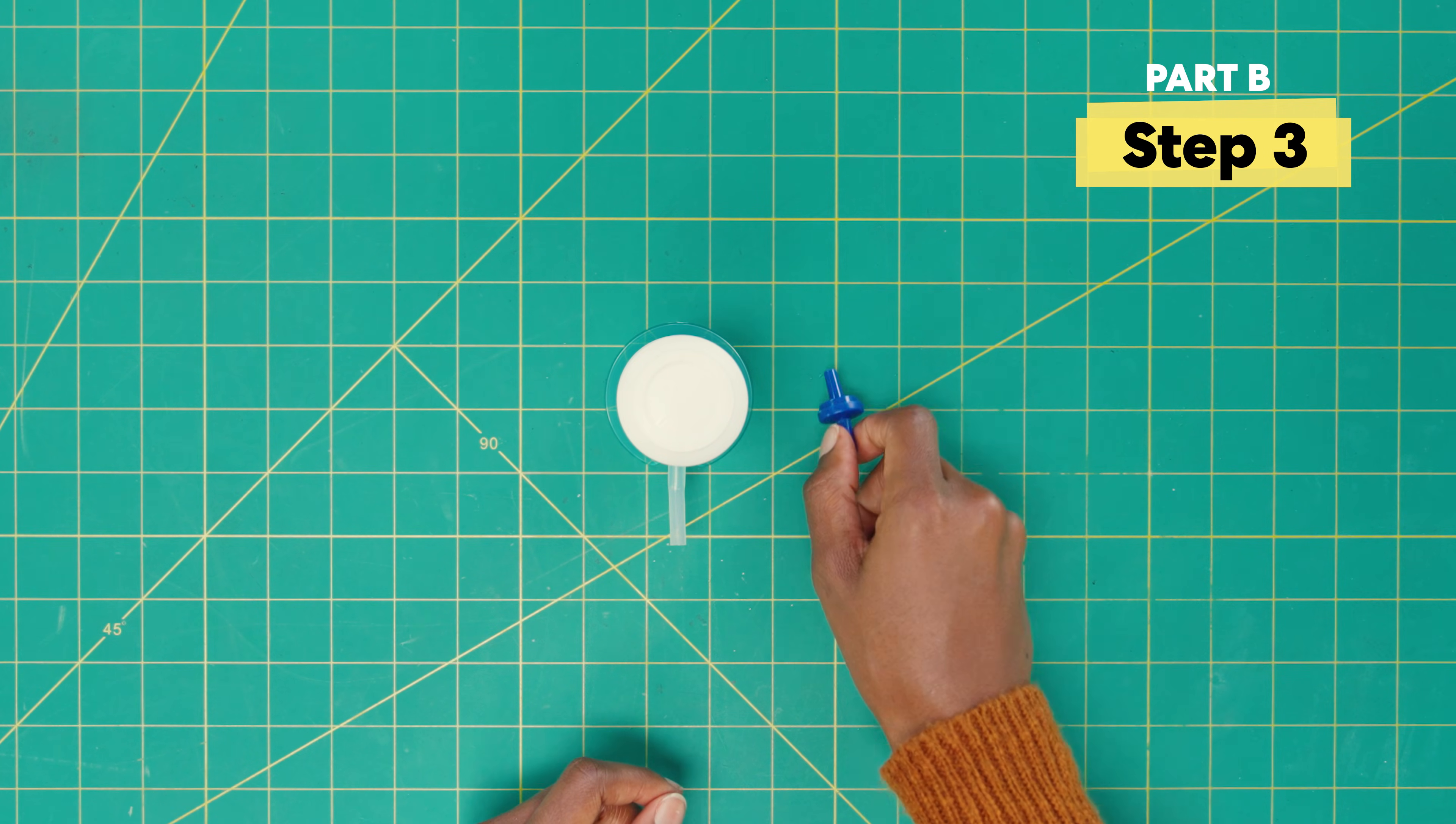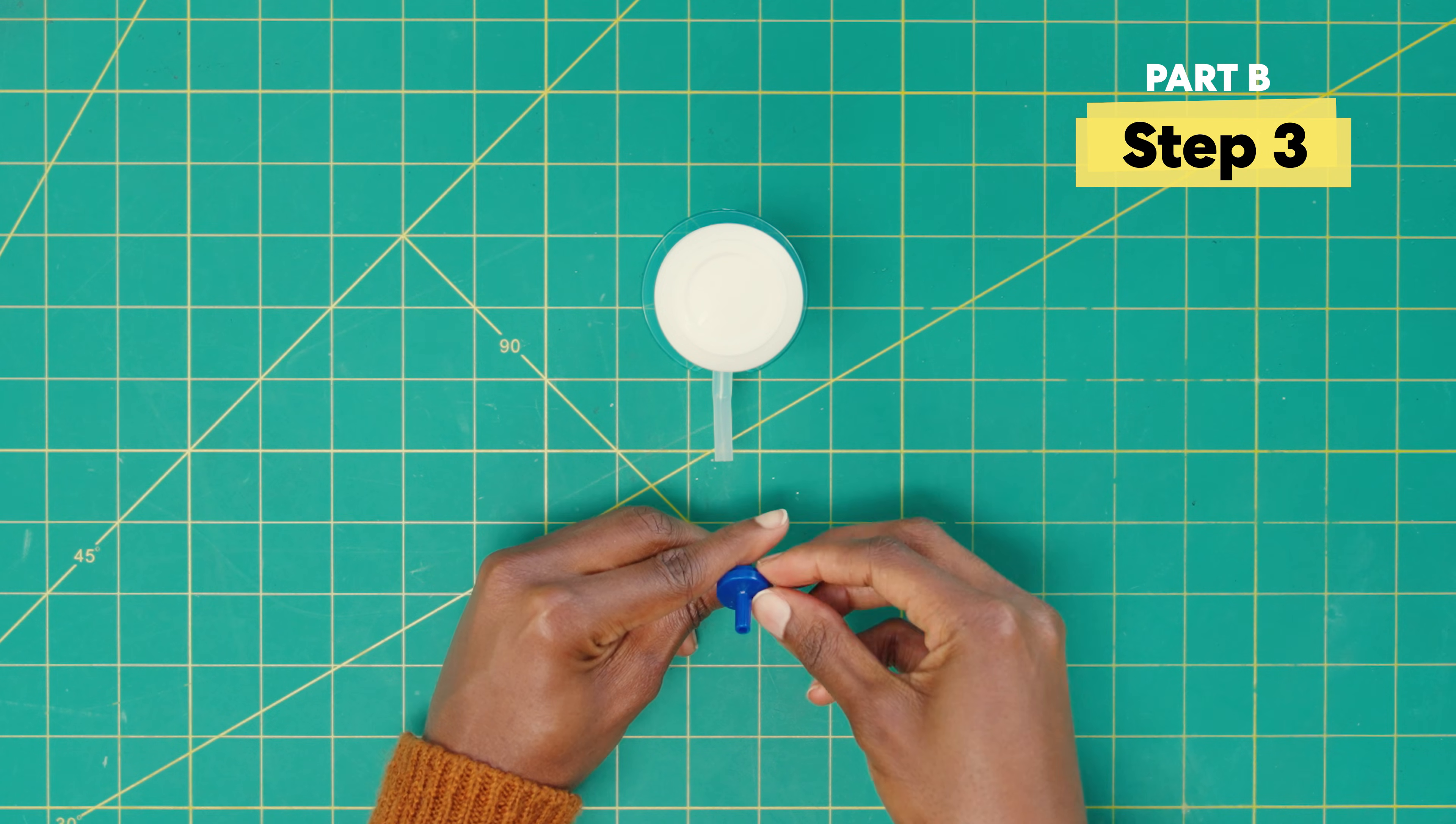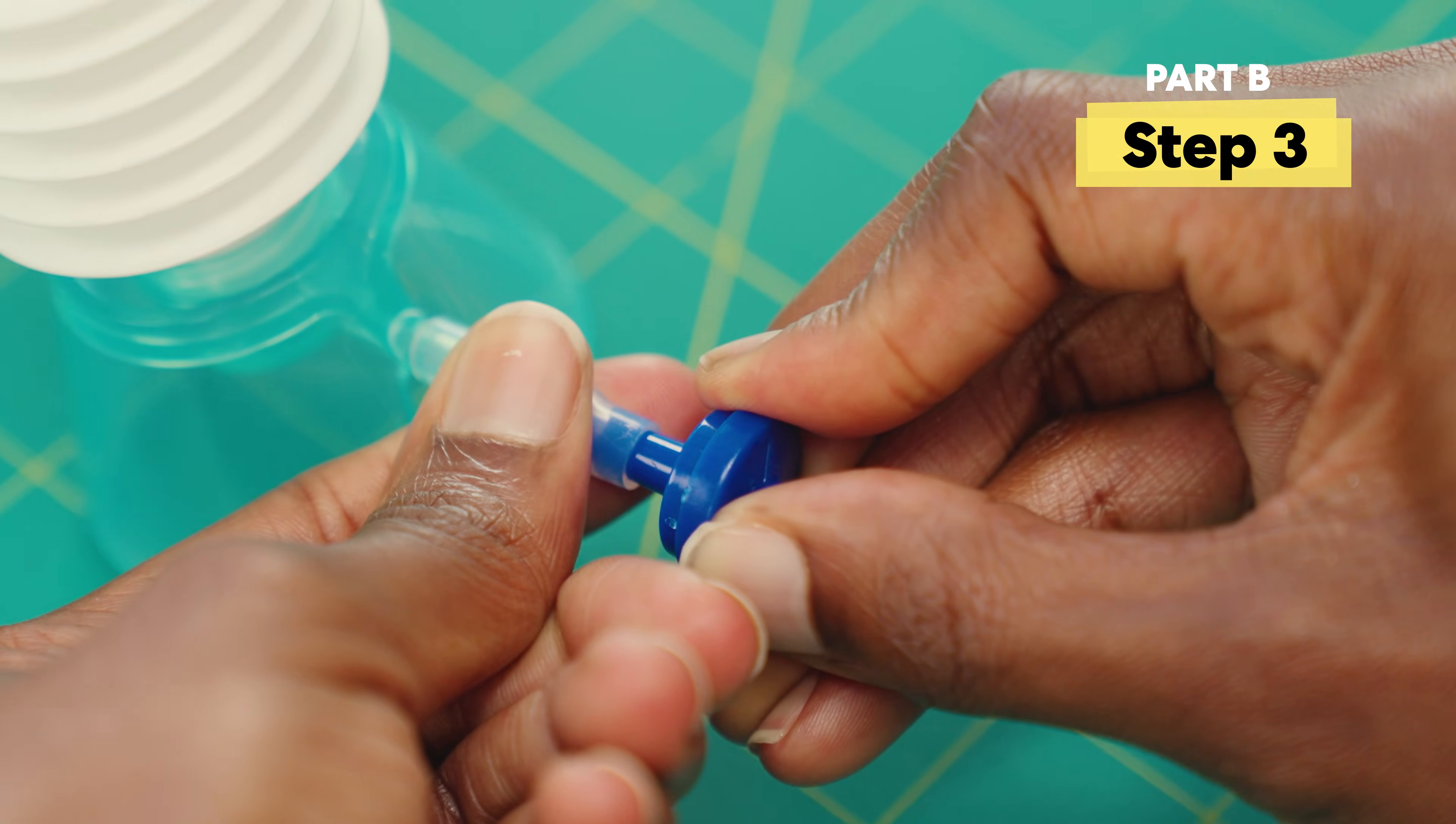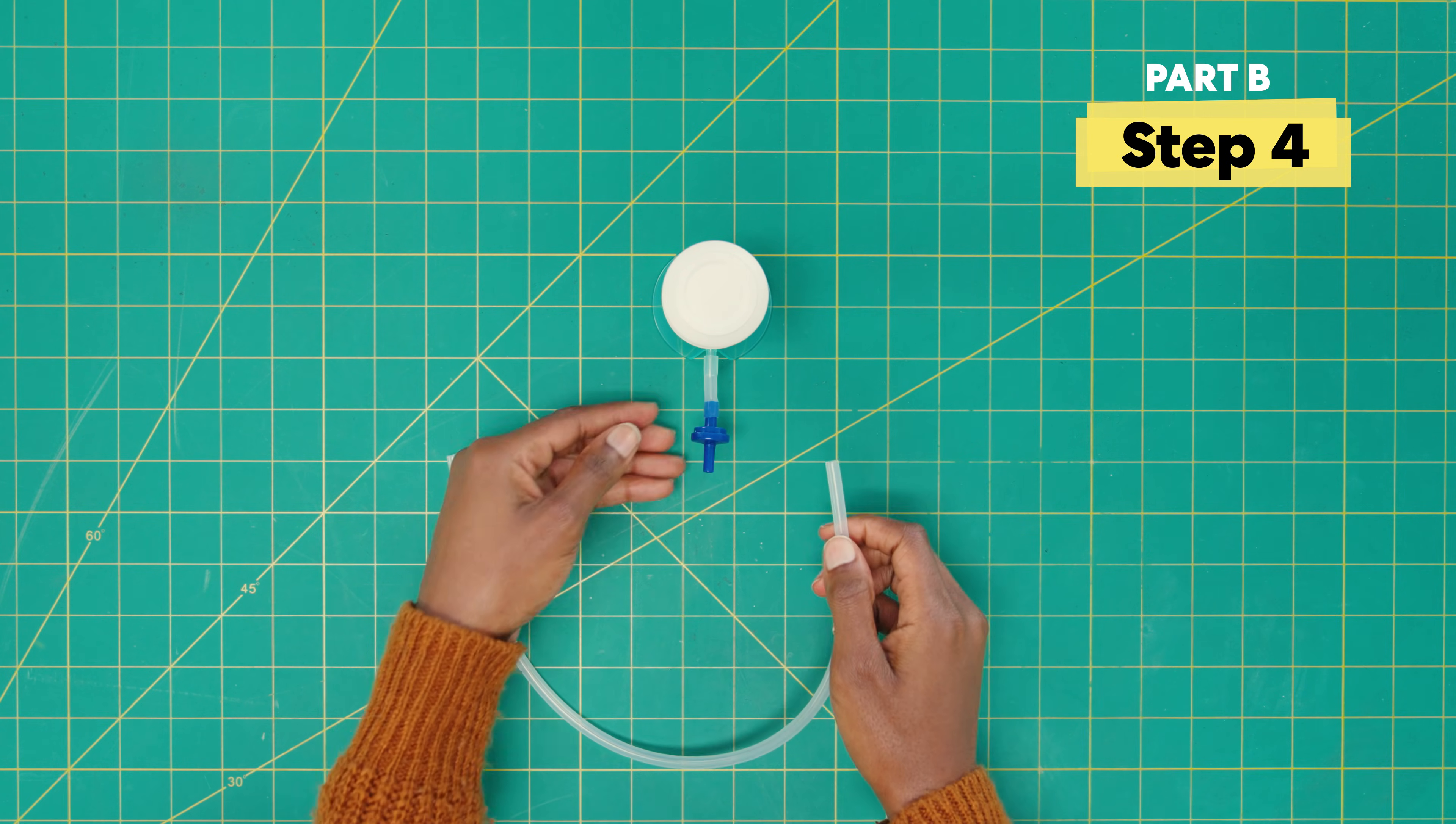Next, place the valve on the small tube. The side with the word out should face out and not connect to the small tube. And now, add the longer tube to the valve.